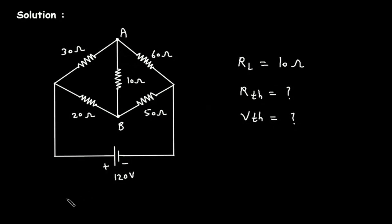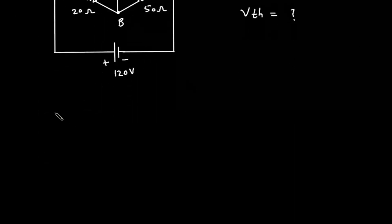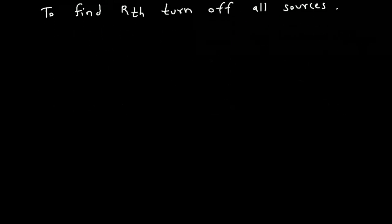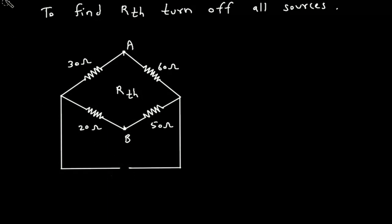First we will find RTH. To find RTH, turn off all sources. First we have to remove this 10 ohm RL — this will be our RTH. We have to turn off this voltage source. When we turn off a voltage source or current source, we replace it by its internal resistance, so it will be a short circuit when we turn off the voltage source. Here this will be our RTH.